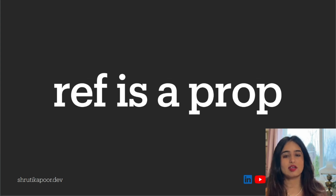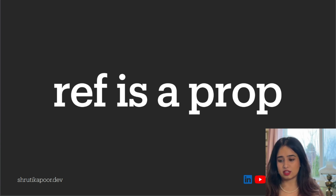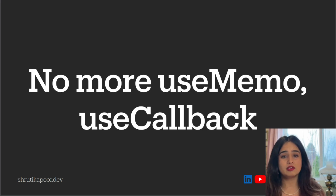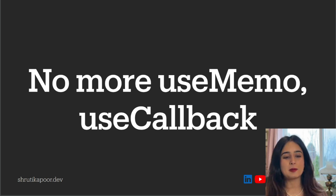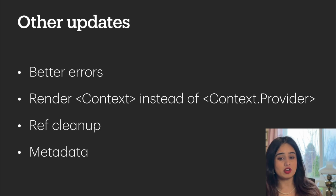Now let's talk about what's changing in React 19. Ref is now a prop, so you no longer have to wrap a ref with forwardRef — no more bugs from ref being undefined. You also no longer need useMemo and useCallback thanks to React Compiler. Errors are now better formatted in the console, and you can render Context directly instead of using a Context Provider.